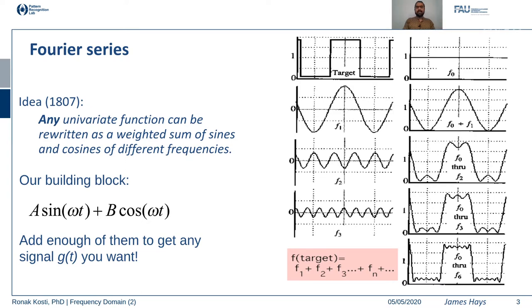Fourier series is a way of representing any univariate function as a weighted sum of sinusoidal waves of different frequencies. The basic building block is a·sin(ωt) + b·cos(ωt), a combination of two sinusoidal waves with amplitudes a and b and the same frequency ω. When we add many such frequencies together, we can represent our univariate function.